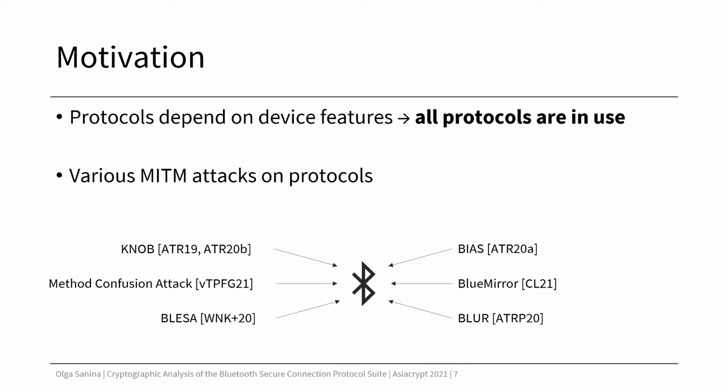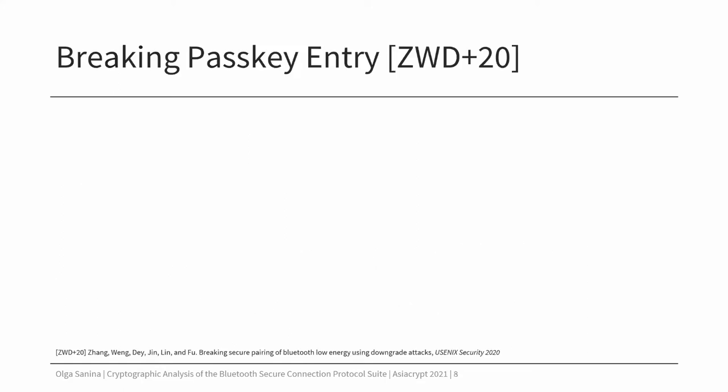In addition, there is a range of various monster-in-the-middle attacks on protocols, starting from reflection and role confusion attacks, up to downgrade attacks on the encryption key size, and attacks on the authentication property where the adversary can learn the encryption key. One of such attacks is presented in the paper by Zan et al. from USENIX last year.